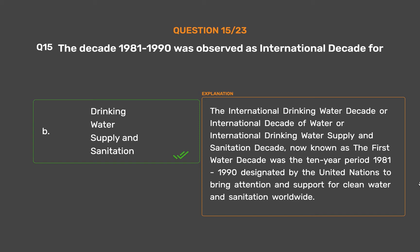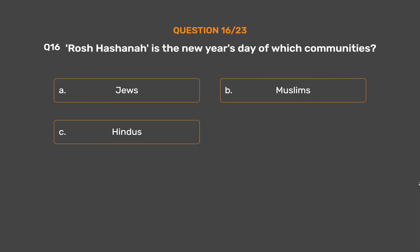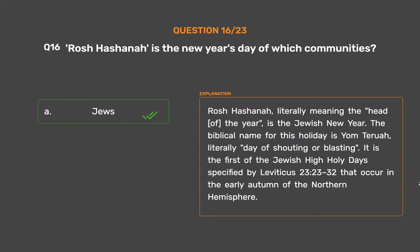Question No. 16. Rosh Hashanah is the New Year's Day of which community? Option A, Jews; Option B, Muslims; Option C, Hindus; Option D, Shinto. The correct answer is Option A, Jews. Rosh Hashanah, literally meaning 'the head of the year,' is the Jewish New Year. The Biblical name for this holiday is Yom Teruah, literally 'day of shouting or blasting.' It is the first of the Jewish High Holy Days specified by Leviticus 23:23–32, occurring in the early autumn of the Northern Hemisphere.